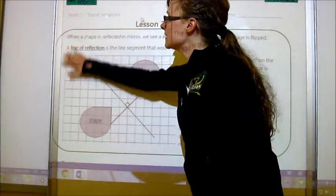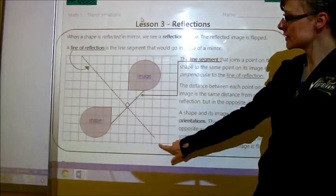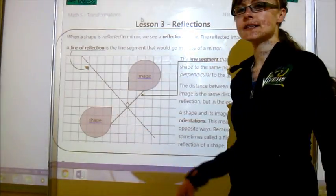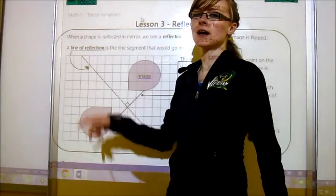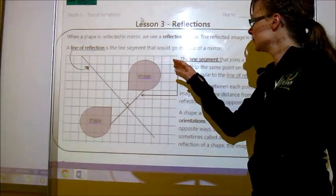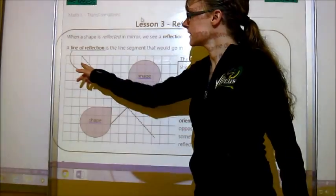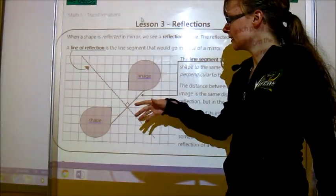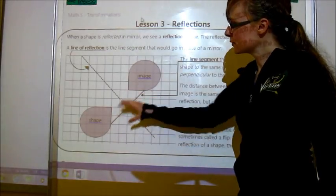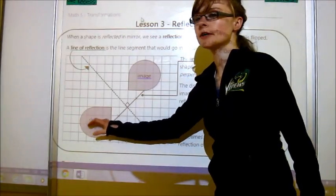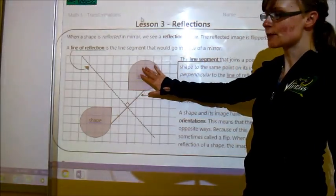So things that you need to know is a line of reflection. So this is basically goes in place of a mirror in math. So it's usually a dotted line. So here we have the shape. This is the original. And then this is the image. So this is the reflected image.